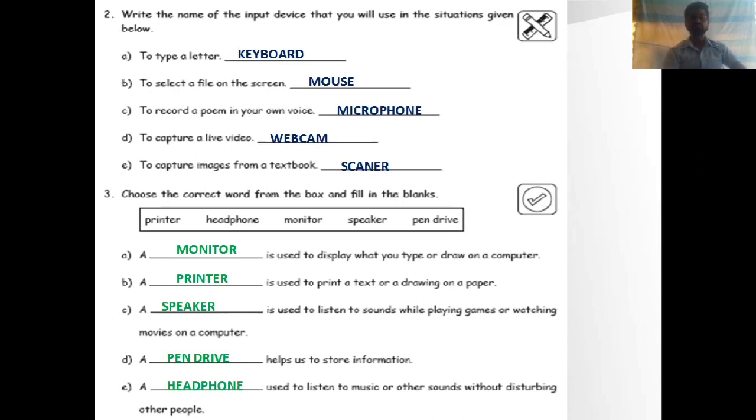Question number 3: Choose the correct word from the box and fill in the blanks. The options are printer, headphones, monitor, speaker, and pen drive. A, blank is used to display what you type or draw on a computer. The answer is monitor. With the help of monitor we can see the output. B, a blank is used to print a text or a drawing on a paper. With the help of printer we can take a printout of any document on paper.